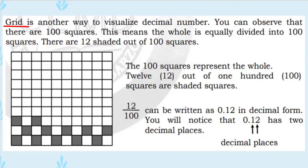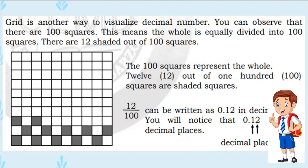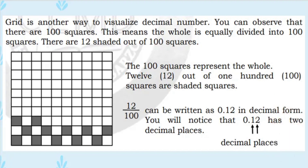Here is another way to visualize a decimal number. You can observe that there are 100 squares. This means the whole is equally divided into 100 squares. There are 12 shaded squares out of 100.